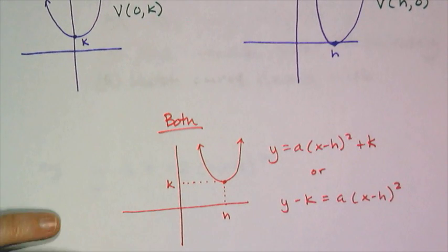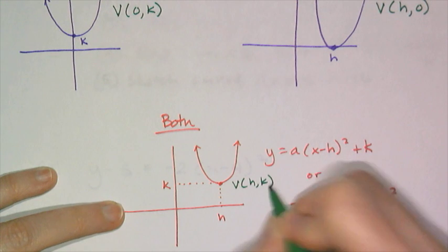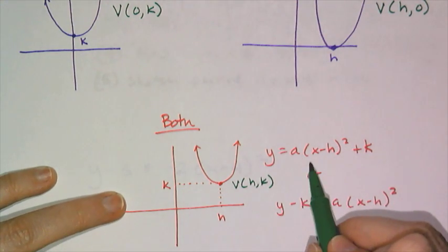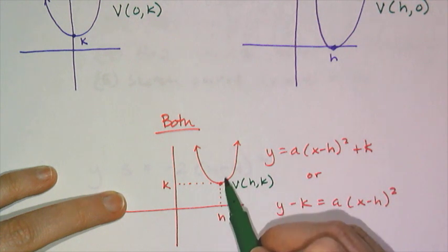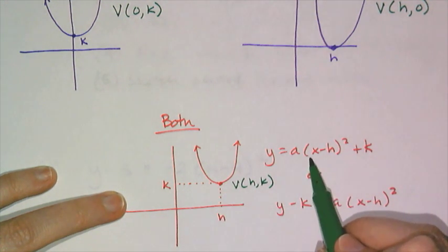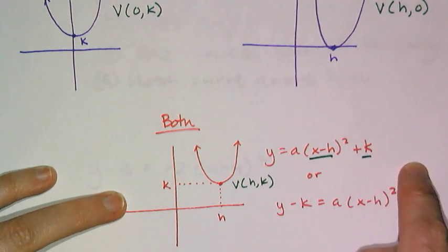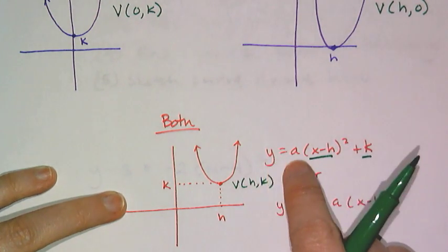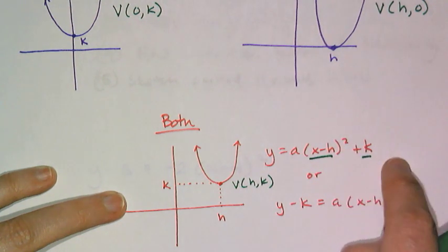So if I have some random parabola where its vertex is located at (h, k), then I have to shift it horizontally and vertically. And so I do both the horizontal shifting and the vertical shifting to get what we call vertex form, which is y equals a, open parenthesis, x minus h, close parenthesis squared plus k.